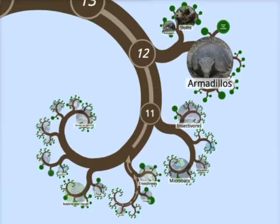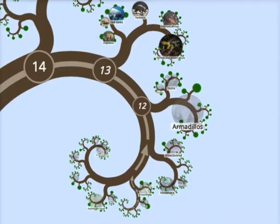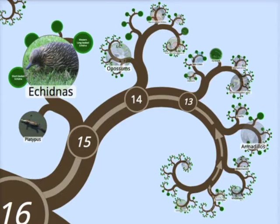Number twelve: armadillos, sloths, anteaters — some of my favourites. Elephants and elephant shrews next. Then the marsupials join. And finally, the monotremes — these are the egg-laying mammals, including famously the platypus, but also the echidnas, which look a bit like a hedgehog but are nothing like a hedgehog. They reproduce by laying eggs and have a little beak like a platypus. So now we've met all of the mammals.